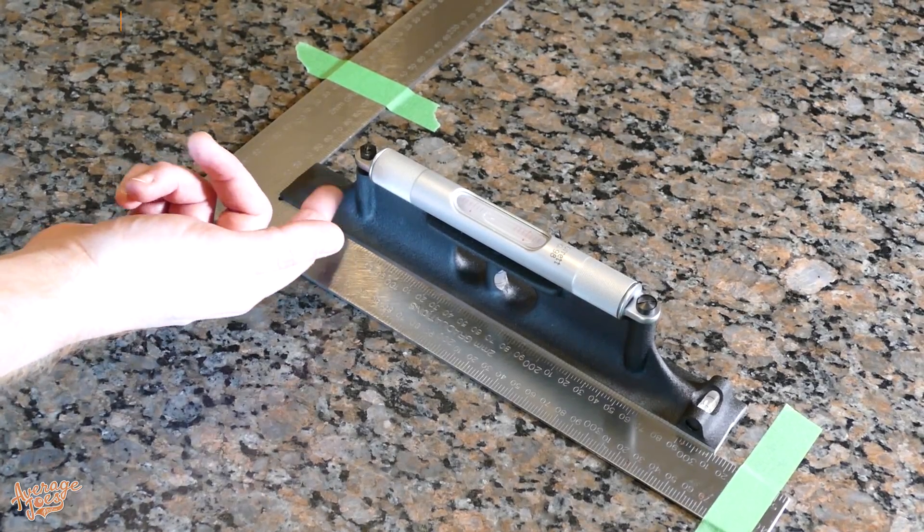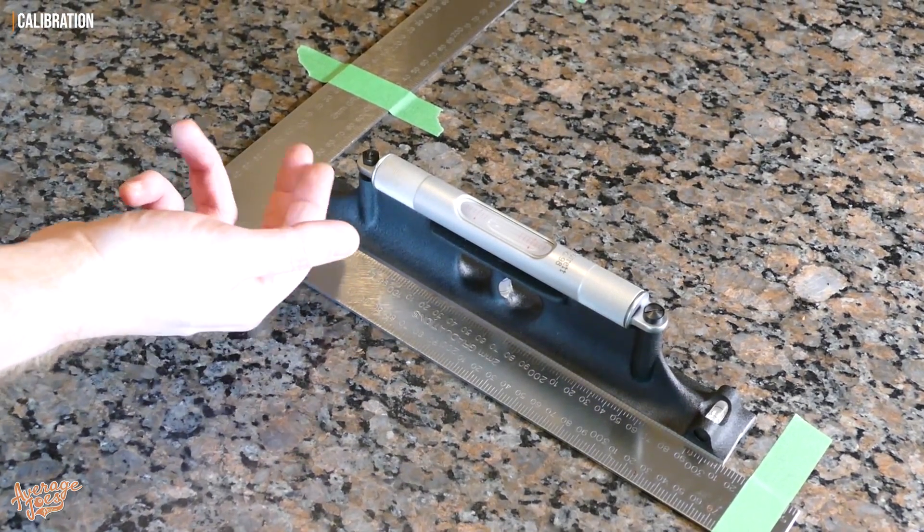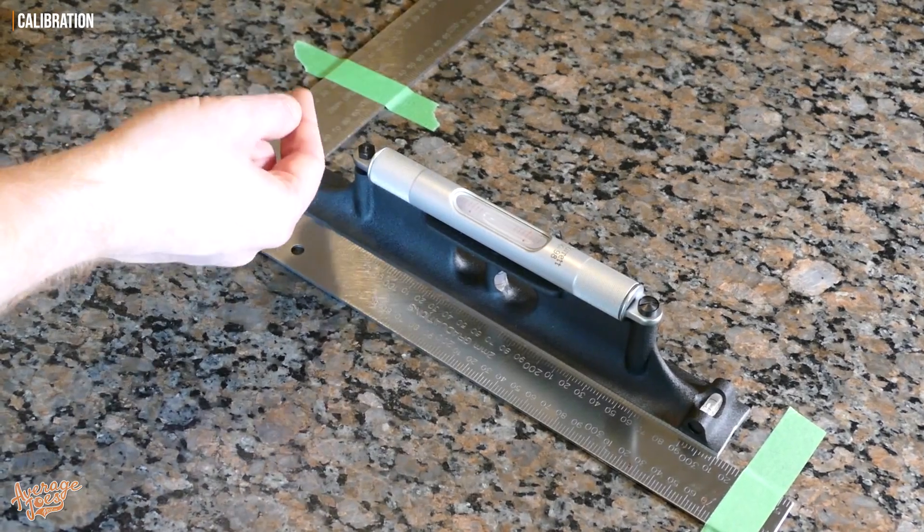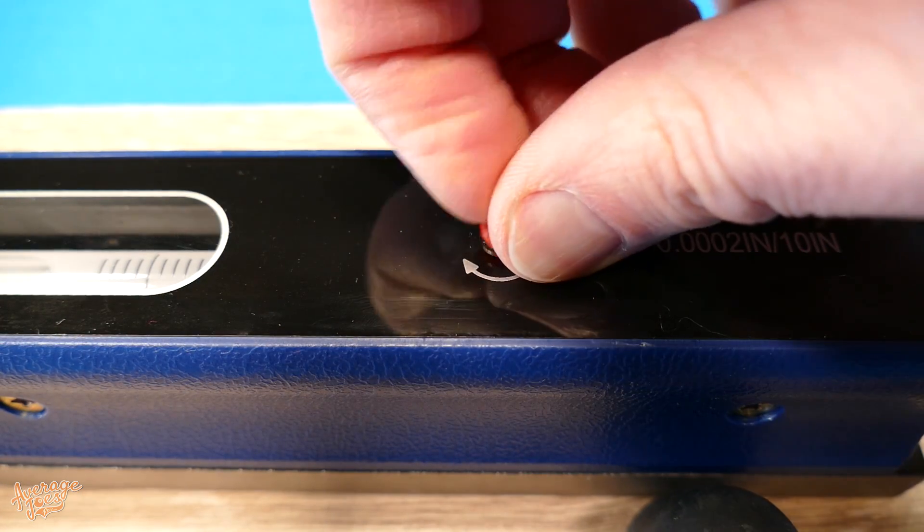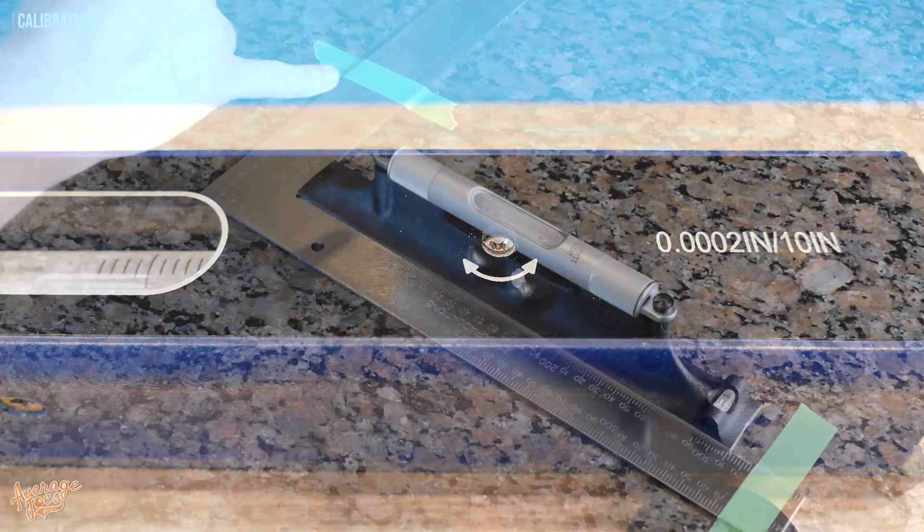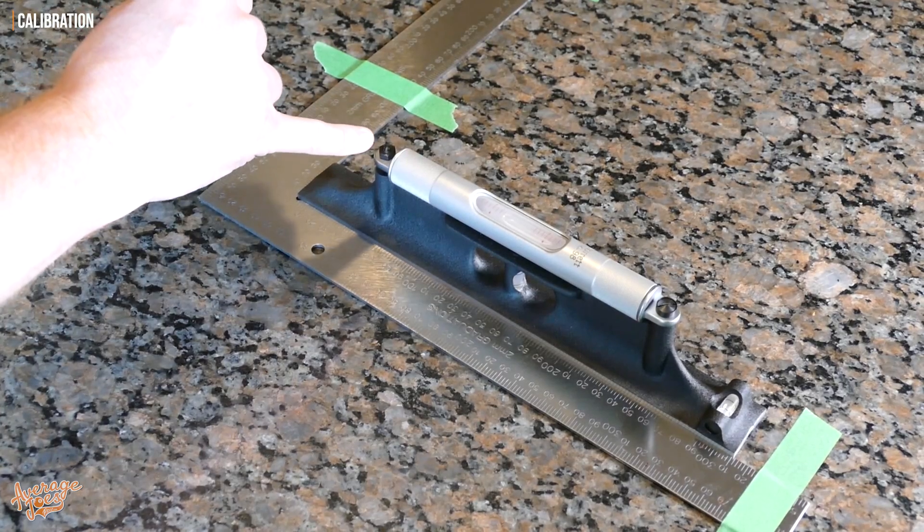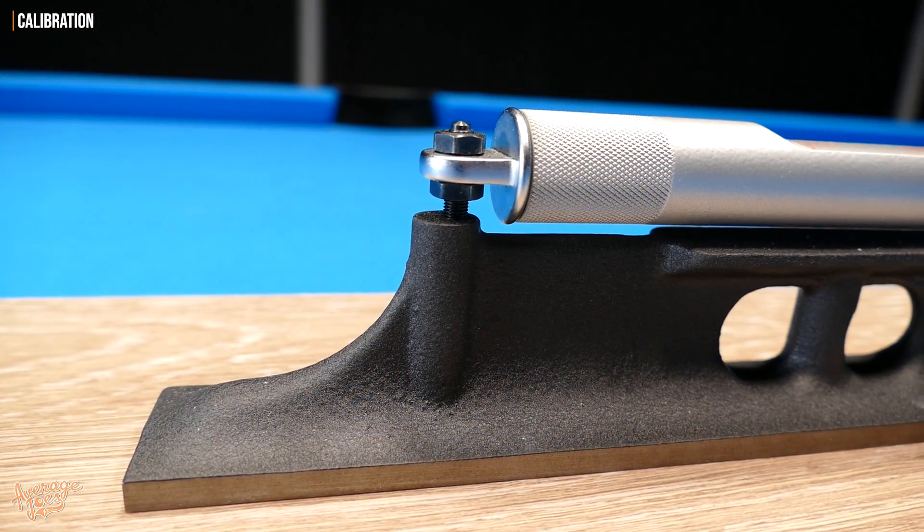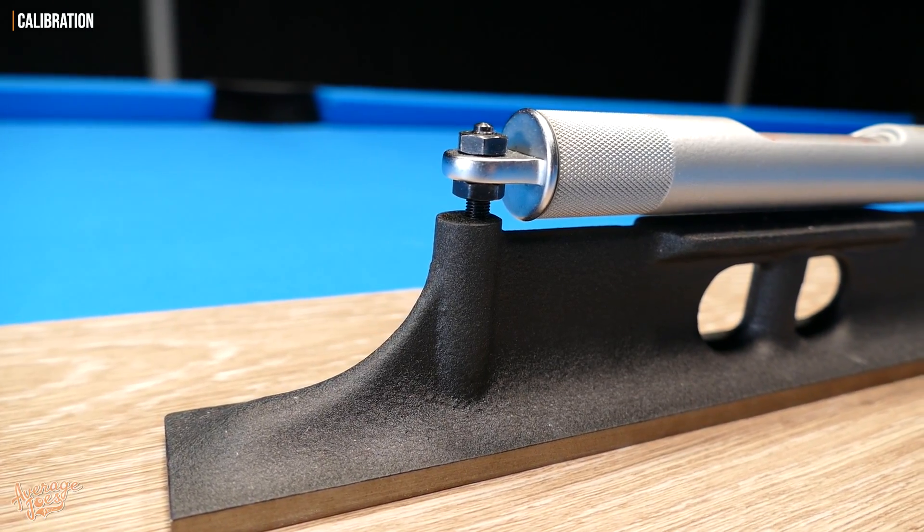Now the method to calibrate the level can vary a little bit depending on the particular model. On some levels you often have a little screw with a cap on it. You can just lift the cap off and make a small adjustment on the screw. What we have here on the Starrett 98 is a couple of nuts. We've got one above the vial casing just here and another just below, and the upper nut is just keeping everything locked in place.